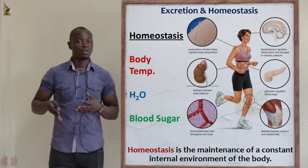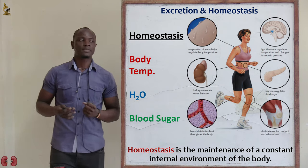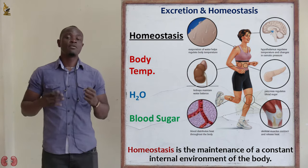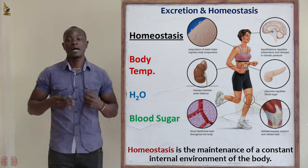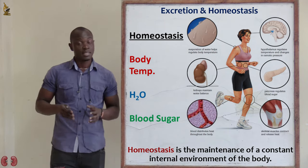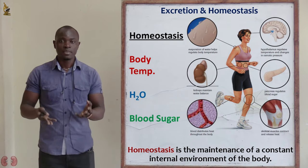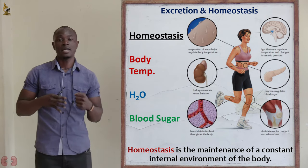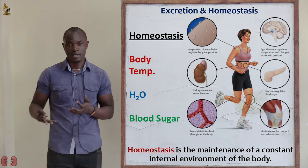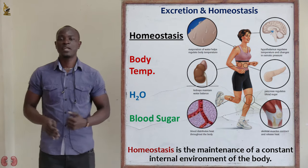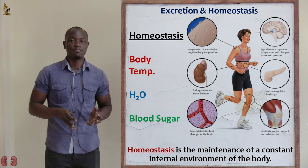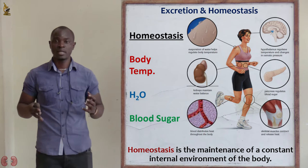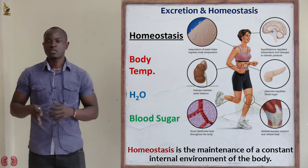Another example of homeostasis: when you are hungry, the brain brings a sensation of hunger, causing the person to go look for food in order to bring conditions back to normal. Similarly, if you feel thirsty — that is also homeostasis — you will go find water to drink, bringing the body conditions back to normal. Homeostasis is essentially the maintenance of a constant internal body environment.